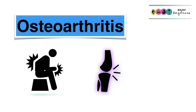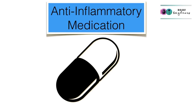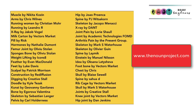One disorder of the musculoskeletal system is osteoarthritis. It's generally caused by wear and tear on the joints or old age, and treatment would be anti-inflammatory medication and possibly surgery to replace the damaged joint. That concludes the video on the skeleton.